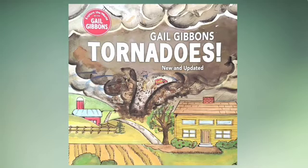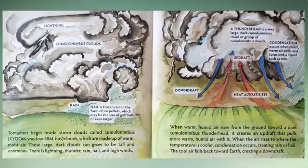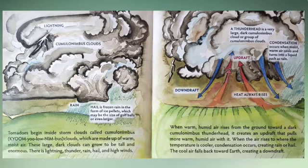Tornadoes by Gail Gibbons, new and updated. It is raining hard, the winds are strong, the sky is dark. Suddenly, a twisting column of moist air reaches down from a cloud and touches the ground. It makes a loud roaring sound. It is a tornado. Tornadoes begin inside storm clouds called cumulonimbus clouds, which are made up of warm, moist air.